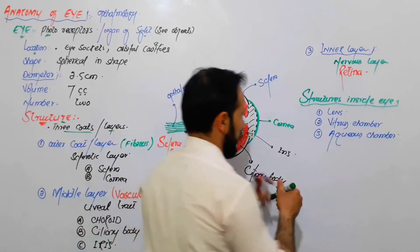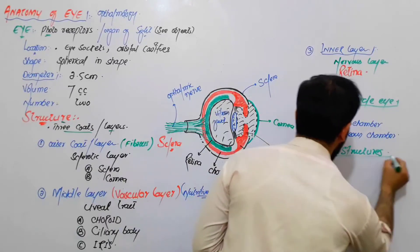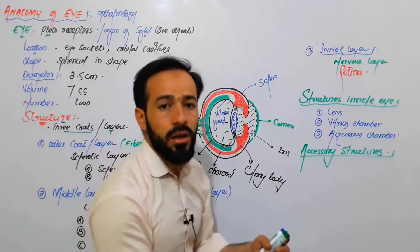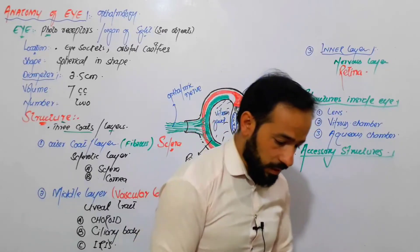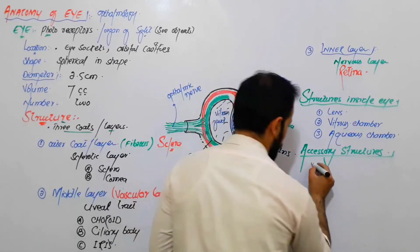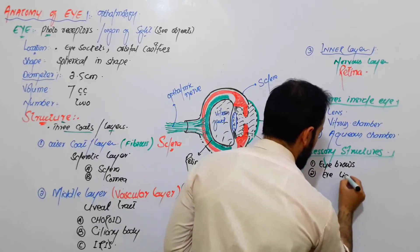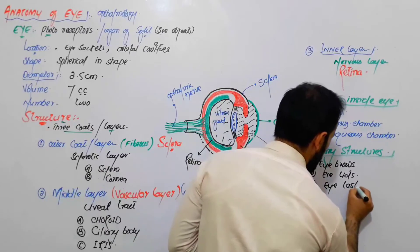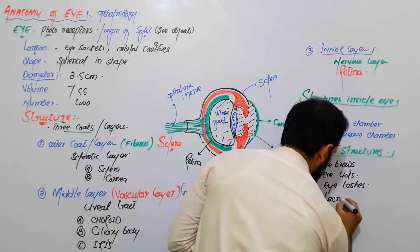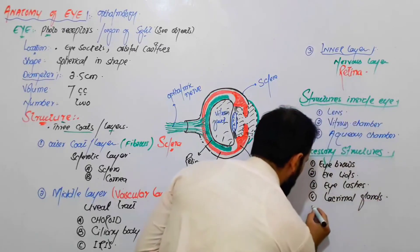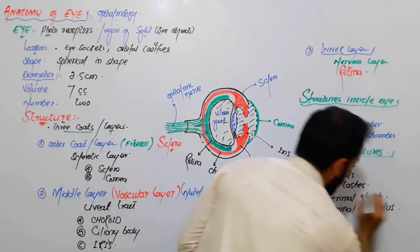We also have some accessory structures of the eye — structures which are related to the eye. For example, the eyelids, the eyelashes, the conjunctiva, and the eyebrows. So the accessory structures are: number one, eyebrows; number two, eyelids; number three, eyelashes; and number four, the lacrimal glands. Then we have the lacrimal apparatus, and I will talk about each of them in separate lectures.